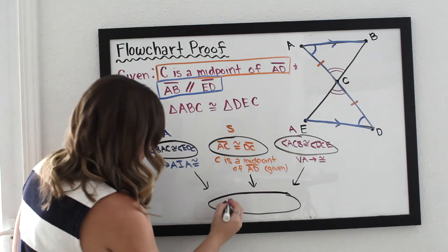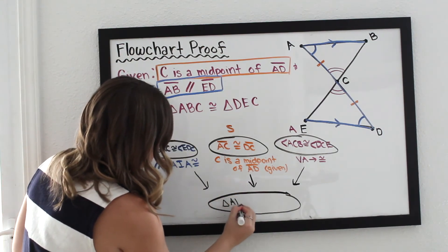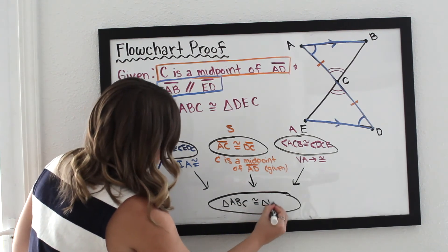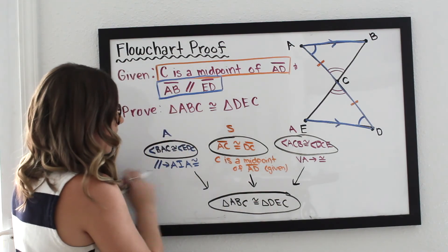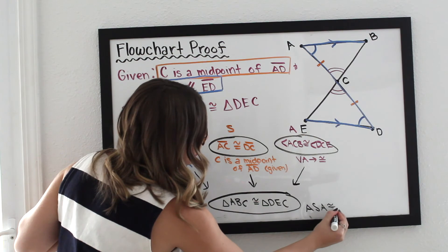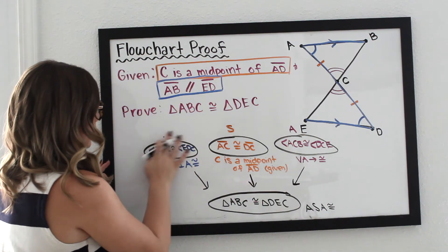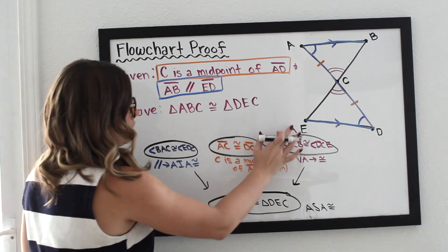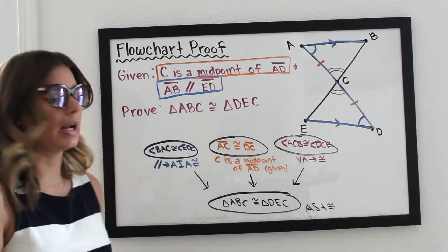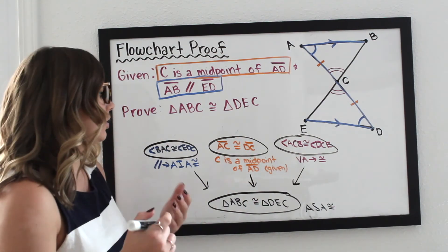So triangle A, B, C is congruent to triangle D, E, C, and we did that by using angle, side, angle for congruence. Now you don't need these letters above your bubbles. I just put them there just to keep myself on track, really, when I'm doing these proofs, but you definitely don't need them.